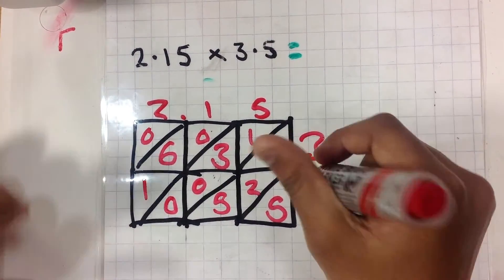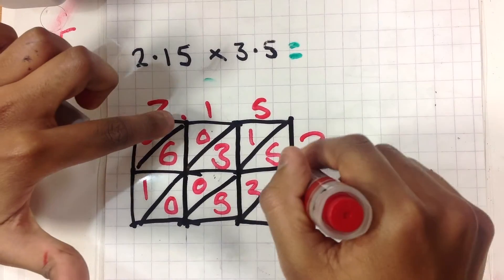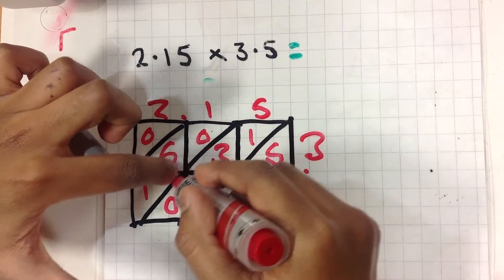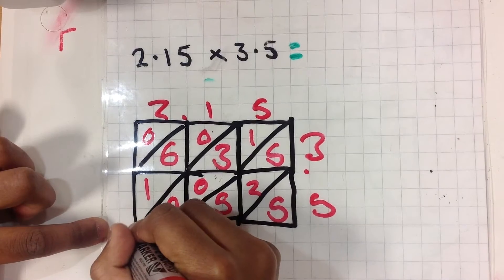And then you add the decimal points. So you go, and then they meet here, and then they go diagonally. So the decimal point is going to be here.